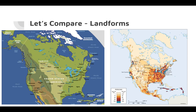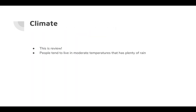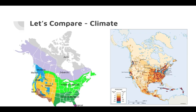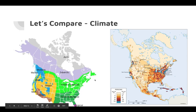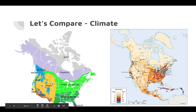Climate is our third physical feature that affects population density. As a review, people tend to live in moderate temperatures with plenty of rain. Looking at our climate map alongside the population density map, you can see a majority of people live on the eastern side of the United States where there's a fairly moderate climate, while over on the western side we get into the Mediterranean climate, which is warm and dry — and that's where we find LA and San Francisco.